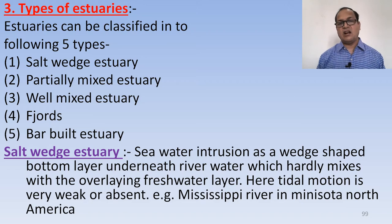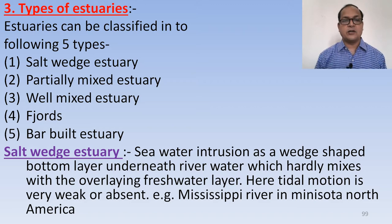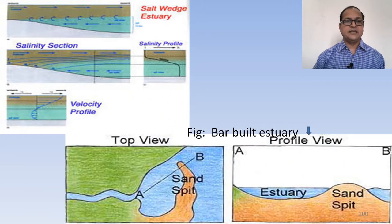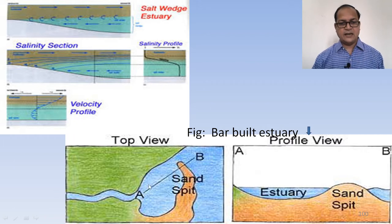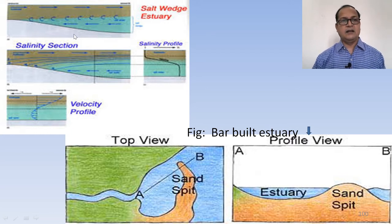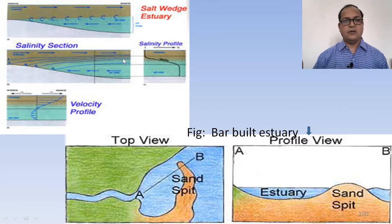First is the salt-wedge estuary. In a salt-wedge estuary, seawater intrusion forms a wedge-shaped bottom layer underneath the river water, which hardly mixes with the overlying fresh water layer. Tidal motion is very weak or absent. For example, the Mississippi River in North America forms this type of estuary. This diagram shows the rivers meeting the ocean forming the estuary, with a sand spit and the velocity profile of the salt-wedge estuary.